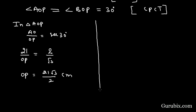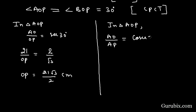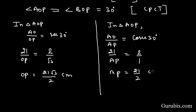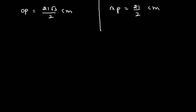Once again in triangle AOP, we shall find the ratio of AO over AP, which equals cosec theta with theta = 30 degrees. Cosec 30 is 2 over 1. AO is 21 and AP is unknown. So AP equals 21 over 2 centimeters.